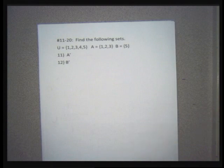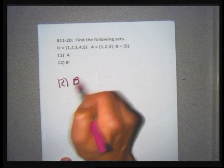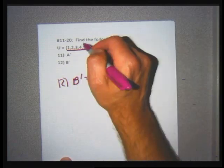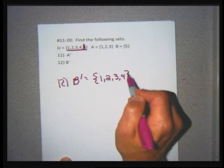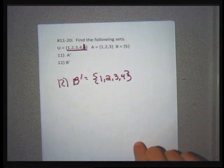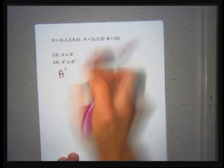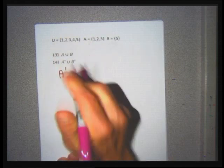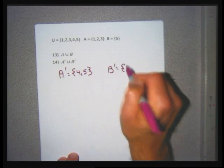Problem 12 has a new universal set: numbers 1 through 5, A = {1, 2, 3}, B = {5}. For number 12, find B complement. I go to my universal set, remove the only element of B which is 5, and B complement has the numbers 1, 2, 3, and 4. A complement is going to be {4, 5} and I might need that in a second.